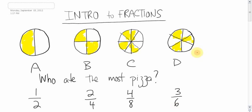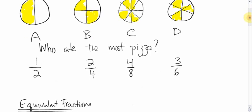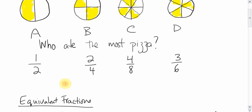Well, the question is, they all ate the same. Because all these fractions are what are said to be equivalent fractions, meaning they are equal to each other. One half is the same as this, which is the same as that, which is the same as that. They've all eaten half a pizza.